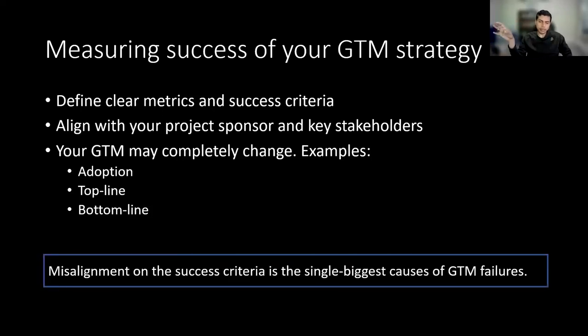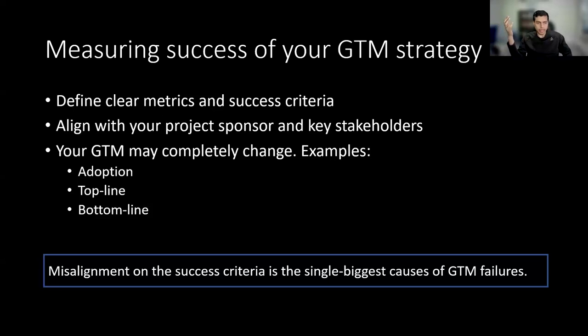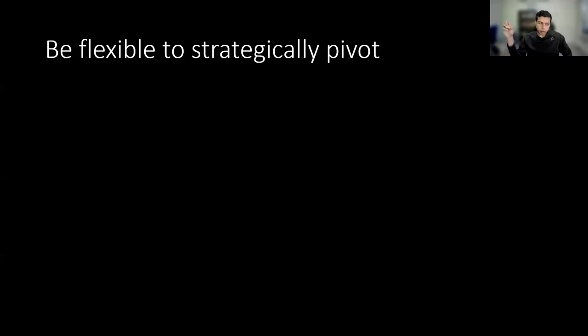Misalignment on the success criteria or the metric you're tracking is the single biggest root cause of go-to-market failure. You do one thing, your stakeholders don't agree, you end up misaligned, and that becomes a big friction to drive the product strategy forward. However, even if you have clearly defined the success criteria, there will still be challenges. There are so many unknowns in a go-to-market strategy that even a clear definition and thorough planning may not work in the real world.